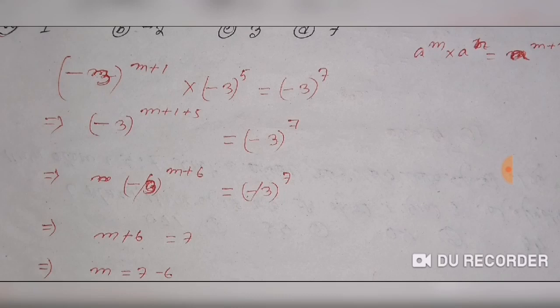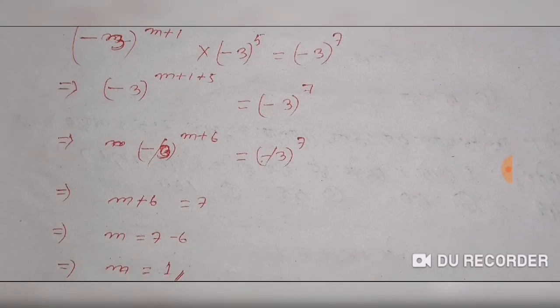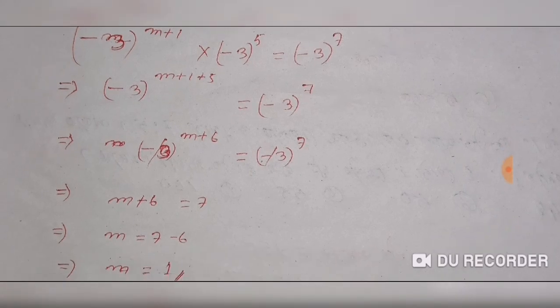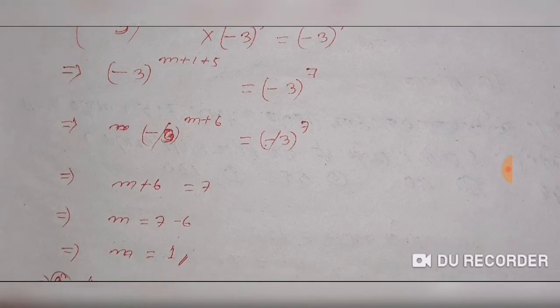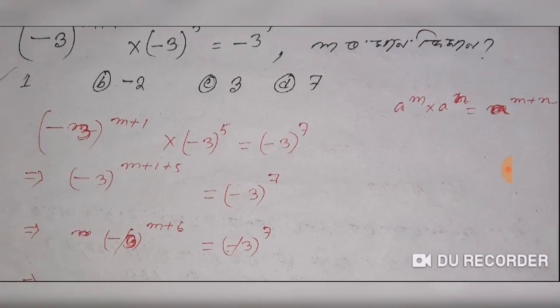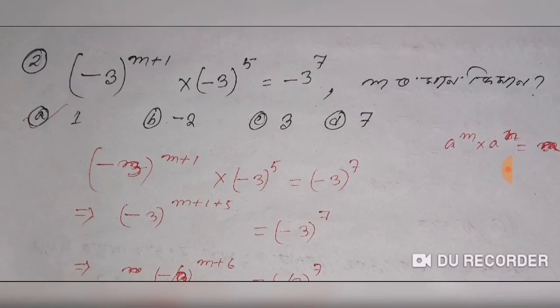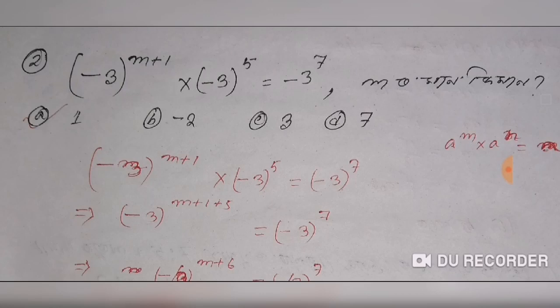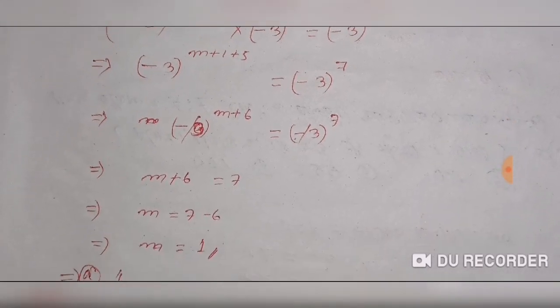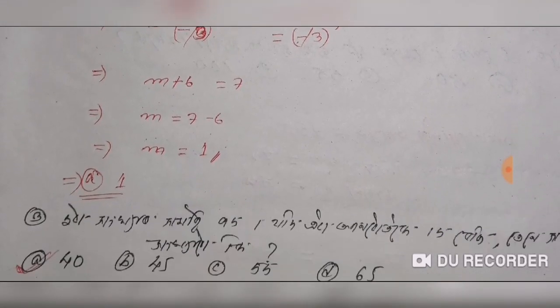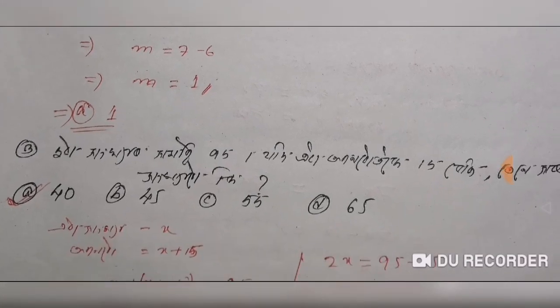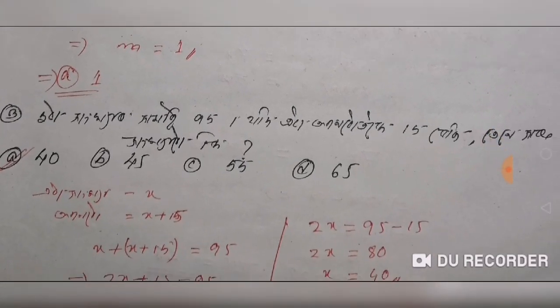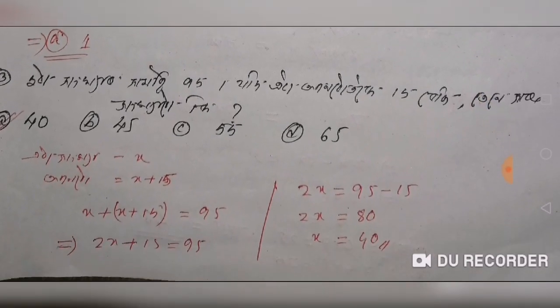M is equal to 7, and M is equal to 7 minus 6, so M is equal to 1. Option 1 is equal to 8. This is the first question.